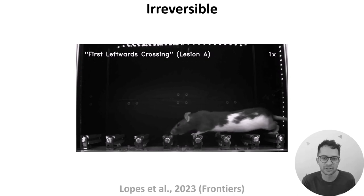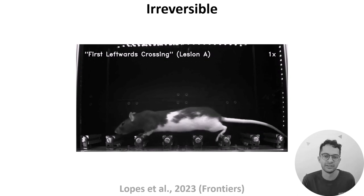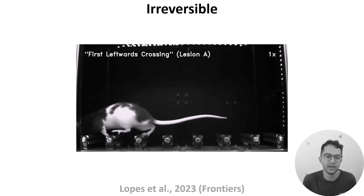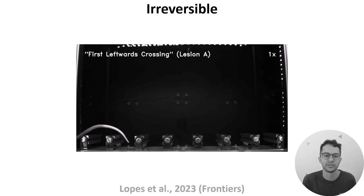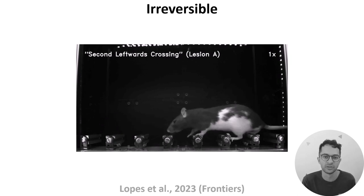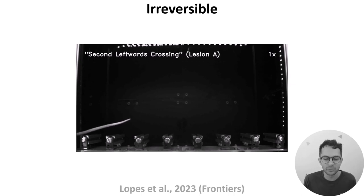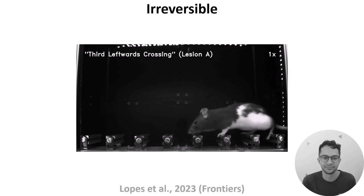In humans, irreversible changes usually result from accidents, disease processes, or surgical interventions. For example, earlier in the course I mentioned a paper which used fMRI to study two patients with damage to their corpus callosums. But in animal models we can irreversibly destroy single neurons or even whole parts of the brain to study the effect.